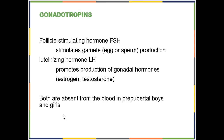Next up are the gonadotropins, FSH and LH. We consider them together because they are regulated together — they are both part of the same feedback loop regulatory mechanism. Don't worry about what they do for now; we'll have a whole chapter for the reproductive system. What luteinizing hormone does is cause the production of gonadal hormones, and that's going to be part of the feedback loop.